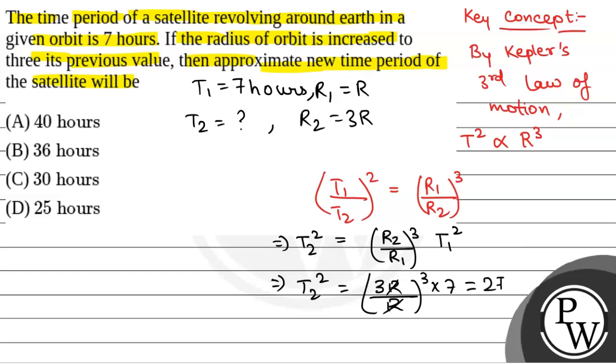That is, 7 squared, sorry, T1 squared is equal to 27 into 49 which is equal to 1323. So, T2 will be equal to square root of 1323 which is equal to 36.37 hours which is approximately equal to 36 hours.